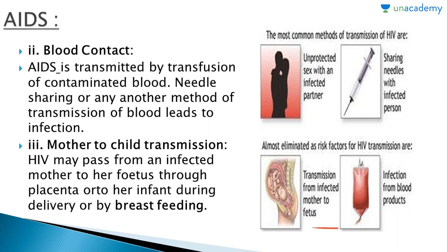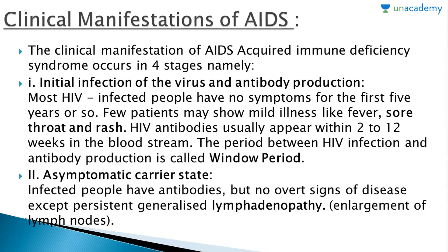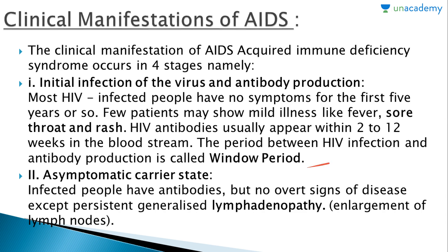If it is known that the mother is infected, we can protect the fetus from infection. Regarding infection from blood products, all blood products are first verified before use. Next, the clinical manifestation of AIDS occurs in four stages. The first stage is initial infection and antibody production — most HIV-infected people have no symptoms for the first five years or so, though a few patients may show mild illness like fever, sore throat, and rash. HIV antibodies usually appear within 2 to 12 weeks in the blood serum; the period between HIV infection and antibody production is called the window period. The second stage is the asymptomatic carrier state — infected people have antibodies but no overt signs of disease, except persistent generalized lymphadenopathy, that is enlargement of lymph nodes.